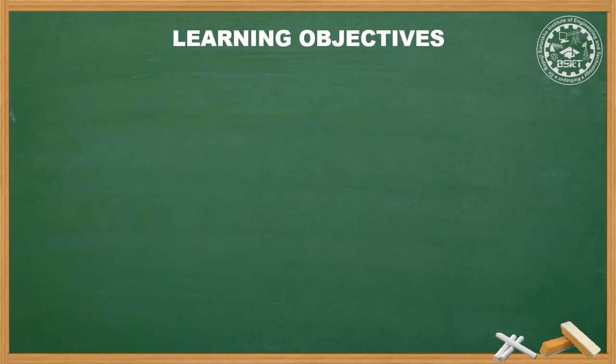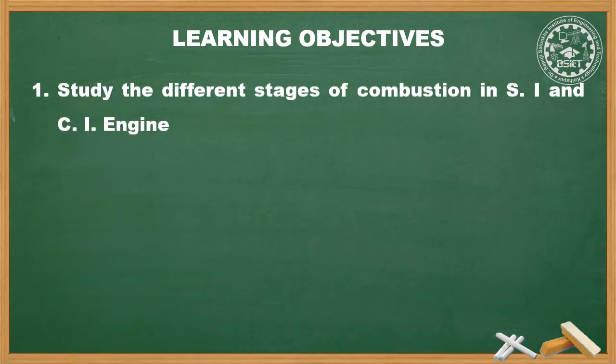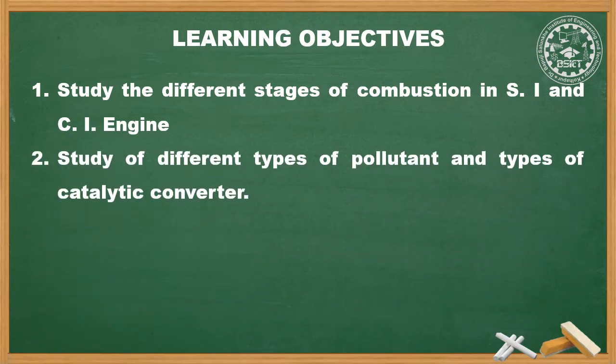The learning objectives for today's session are: Number 1, study the different stages of combustion in SI and CI engine. Number 2, study of different types of pollutant and types of catalytic converter. Pollutants are the gases coming out of a vehicle which can be harmless or harmful. The catalytic converter is a type of muffler or silencer that is used to reduce the emissions coming out from an IC engine powered vehicle.